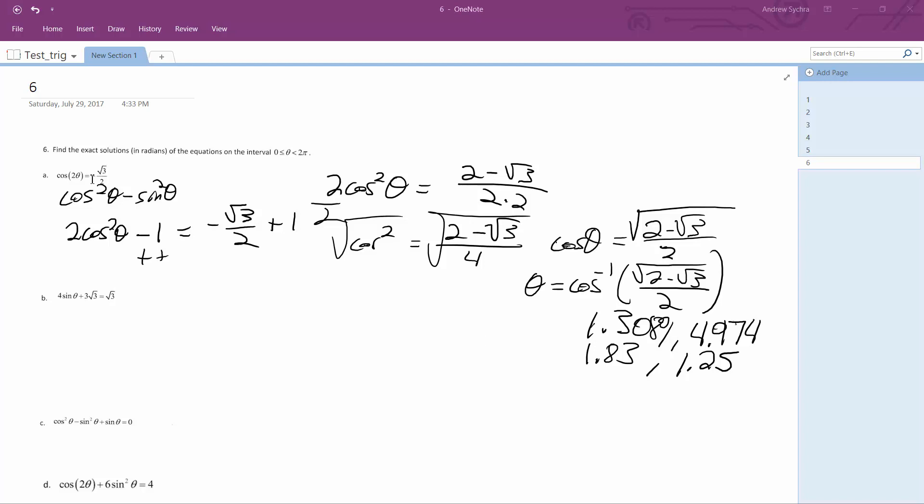One way to look at it - don't take this exactly for what it is - but normally the cosine is equal to negative square root of 3 over 2 in quadrants 2 and 3, but usually when you have a double angle, there'll be twice as much, so in this case, four answers.